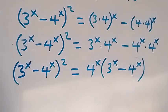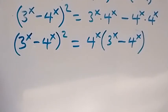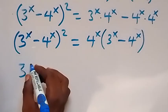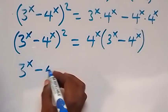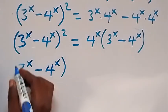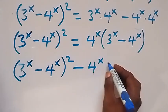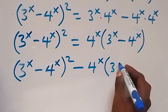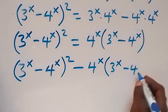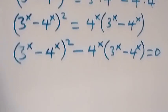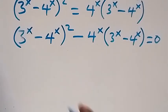Let's take what is on the right side to the left hand side — when it comes here it becomes minus. So we have 3 raised to power x minus 4 raised to power x, all raised to power 2, then minus 4 raised to power x into bracket 3 raised to power x minus 4 raised to power x, equals to zero.